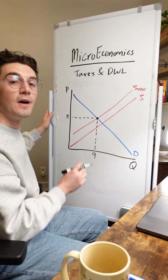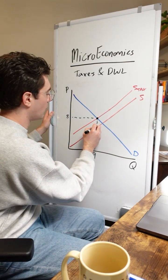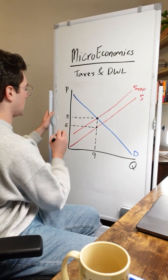Look where this line intersects the old supply curve and then draw a line across like this. We're going to say this happens at $6.